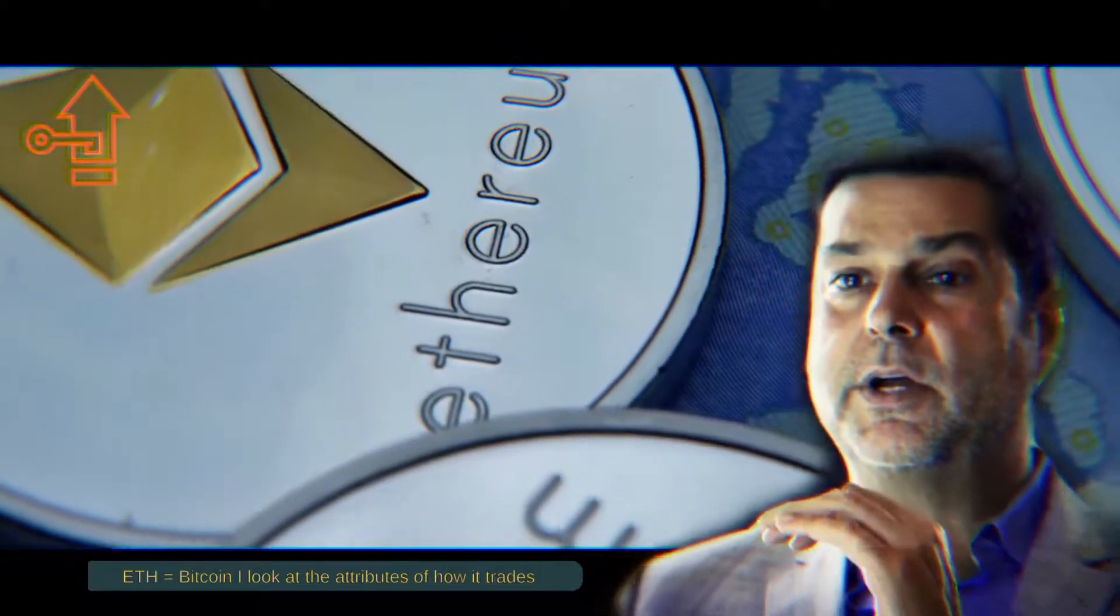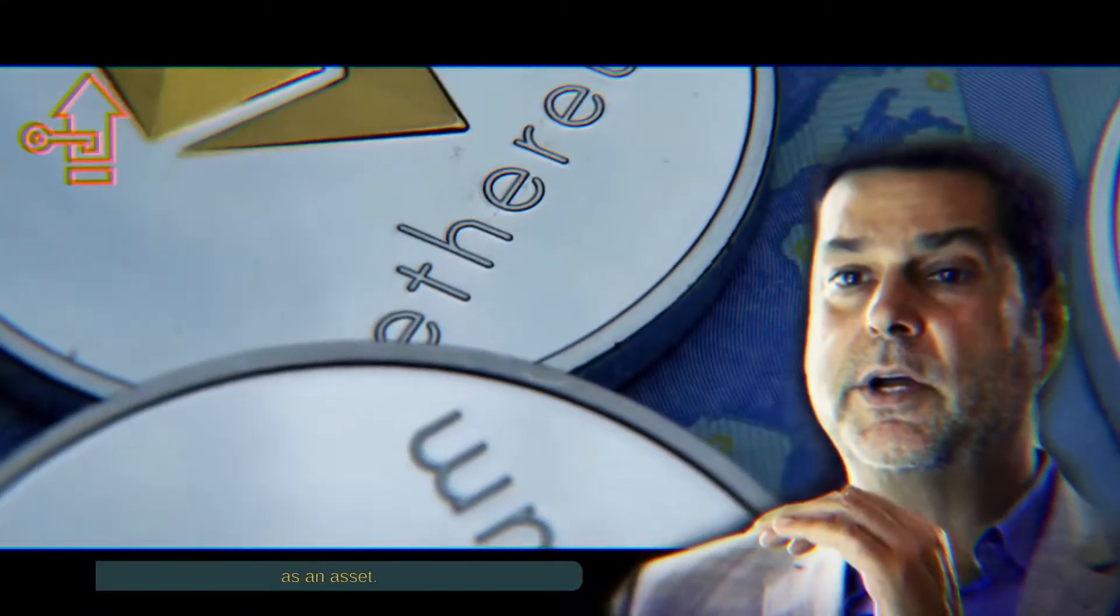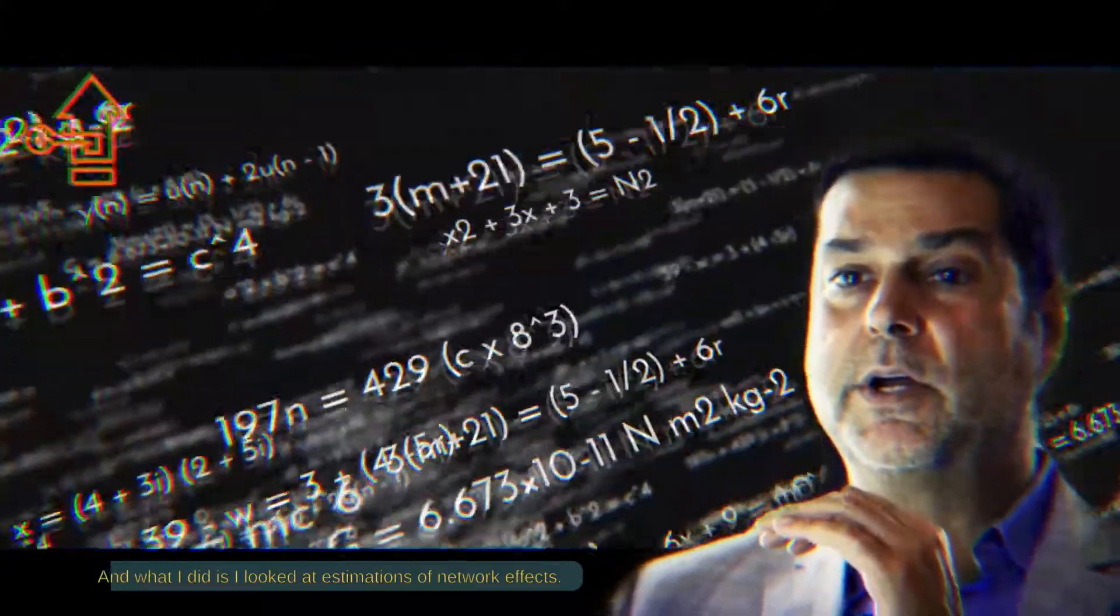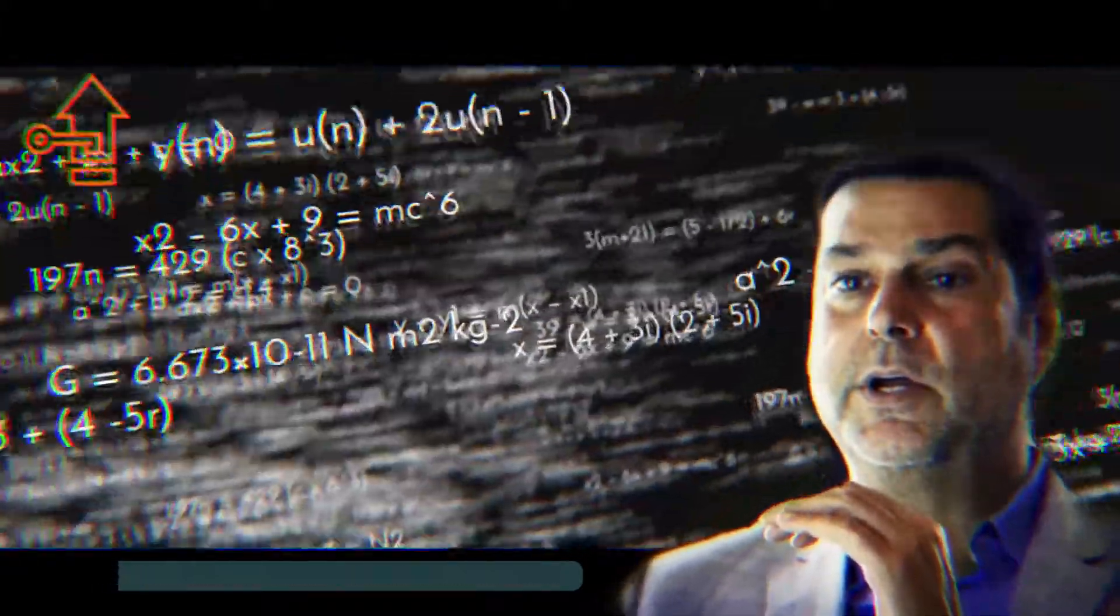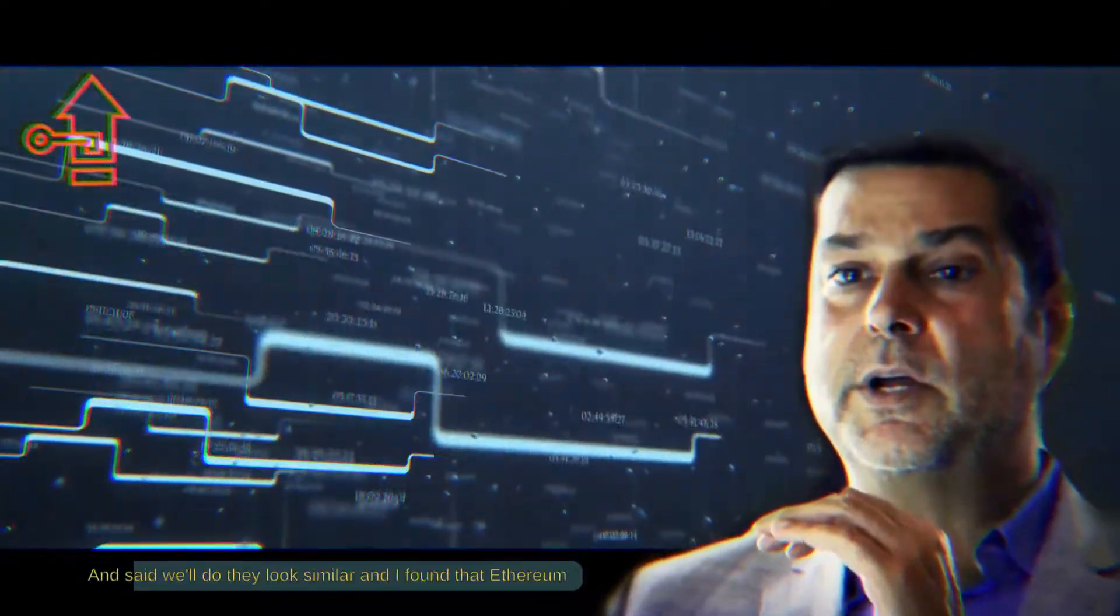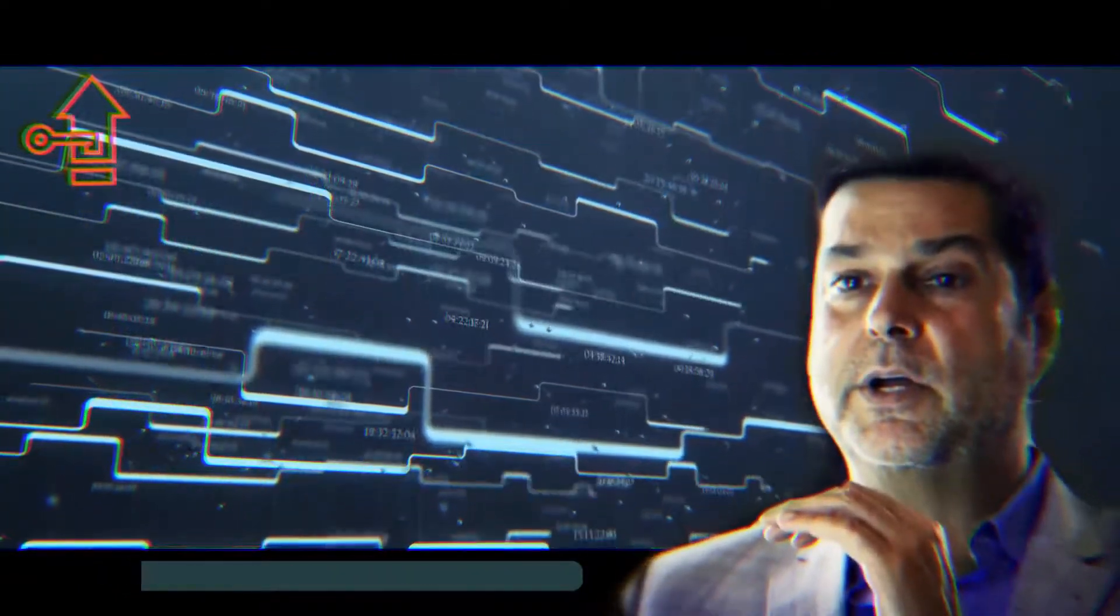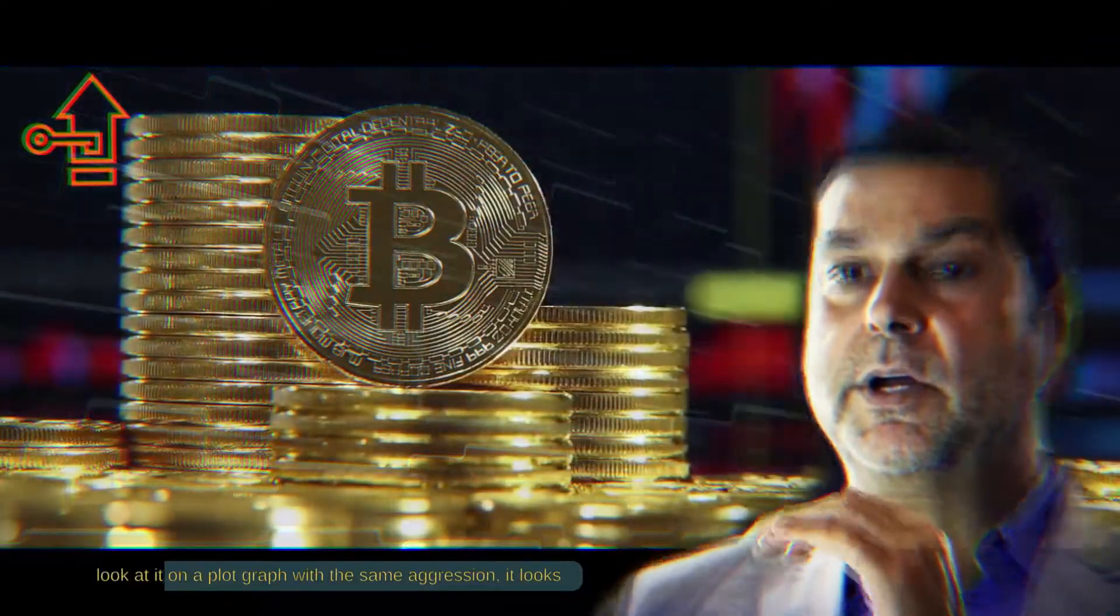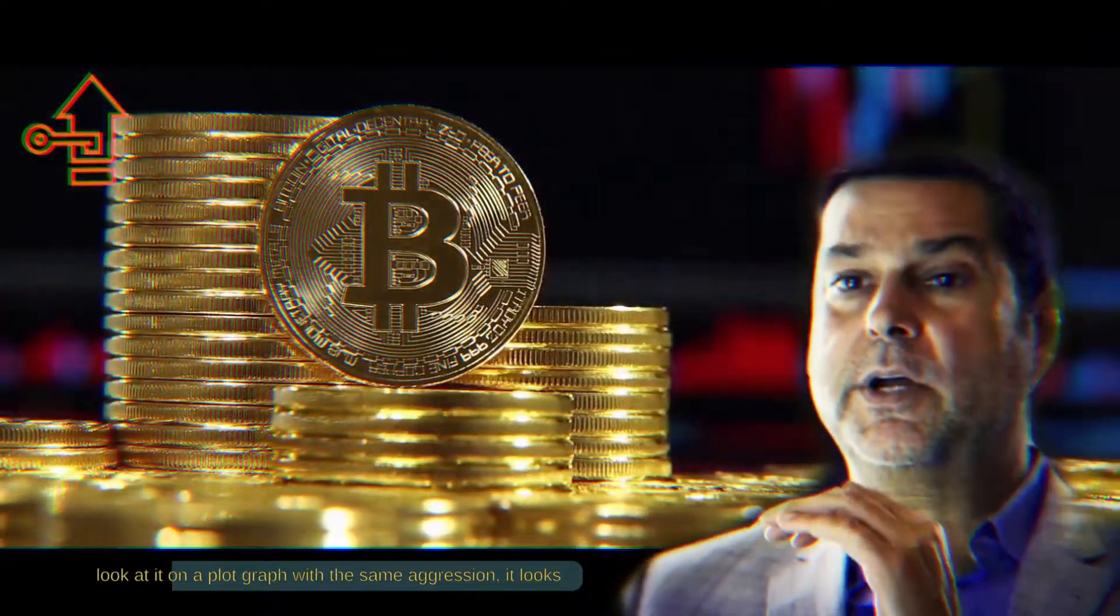ETH equals Bitcoin. I look at the attributes of how it trades as an asset. And what I did is I looked at estimations of network effects and said, well, do they look similar? And I found that Ethereum was exactly mirroring Bitcoin. When I say exactly, when I look at it on a plot graph with the same regression, it looks similar.